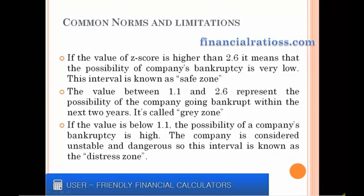If the value of the Z-Score is higher than 2.6, it means that the possibility of company's bankruptcy is very low, so the company is considered safe. This interval is known as the safe zone. Values that are between 1.1 and 2.6 represent the possibility of the company going bankrupt within the next two years. This interval is known as the gray zone.